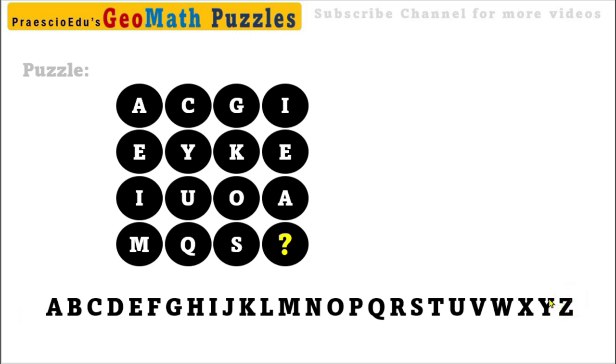to Z, all 26 alphabets. Now let's see here in the column A, E, I, M. From A to E